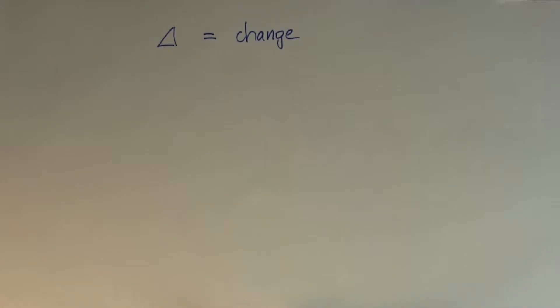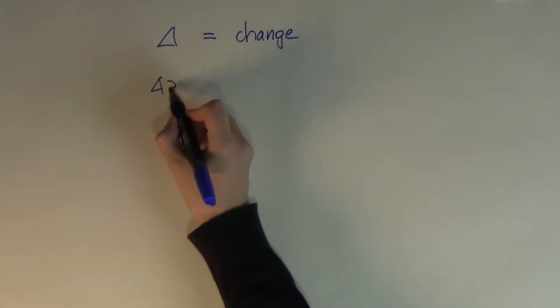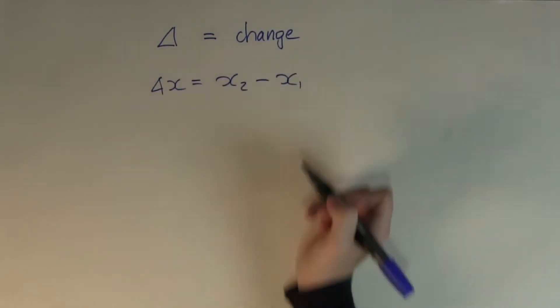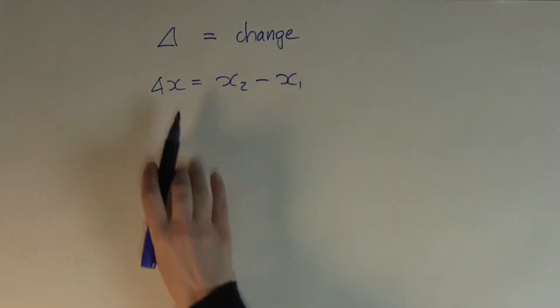So how do we actually calculate the change? When I write delta x equals x2 minus x1, x is some kind of quantity, some sort of product. It can be price, can be quantity demanded, can be income, anything.